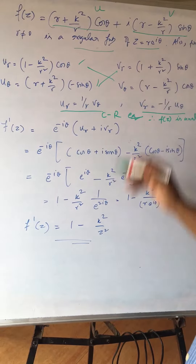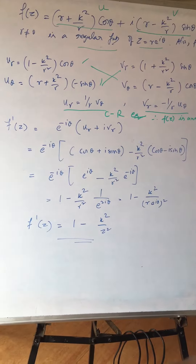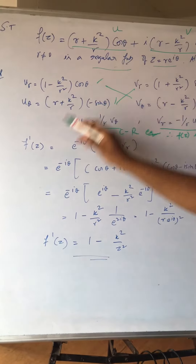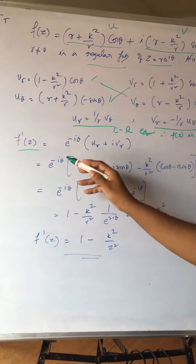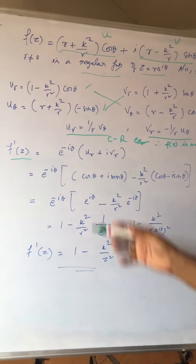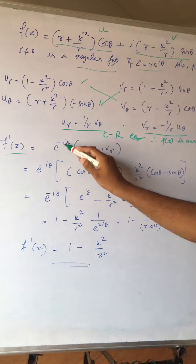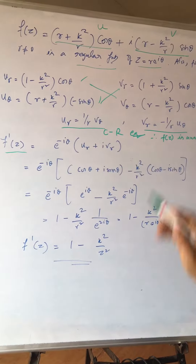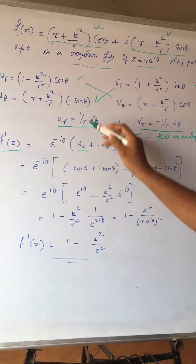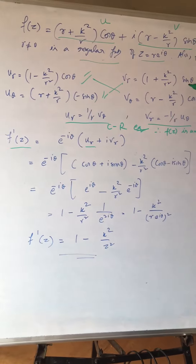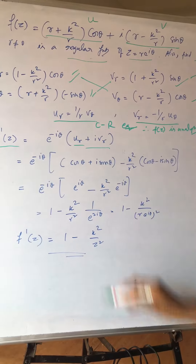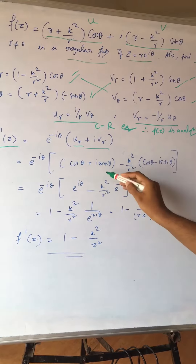Considering z = r·e^(iθ), now let us find f'(z). Using the Cauchy-Riemann equation in polar form, we have f'(z) = e^(-iθ)·(u_r + i·v_r). Now u_r and v_r are the expressions we computed earlier — let us substitute those two values.